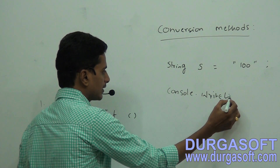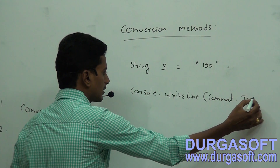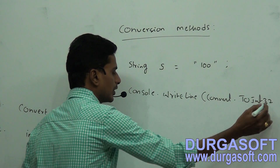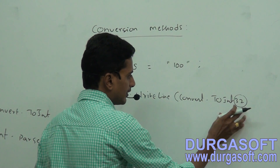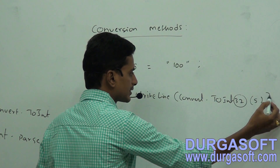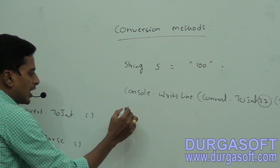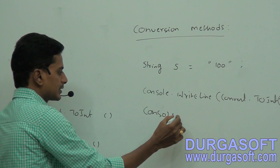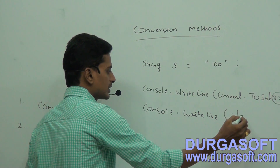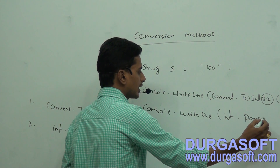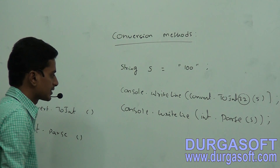First I write: Console.WriteLine(Convert.ToInt32(s)). Then: Console.WriteLine(int.Parse(s)). And finally Console.Read() to keep the screen open. I'm using both methods — Convert.ToInt32 and int.Parse — and in both cases the result will be displayed.